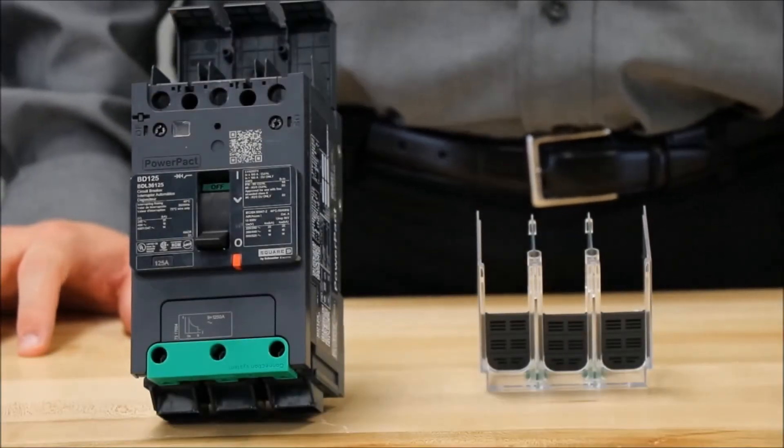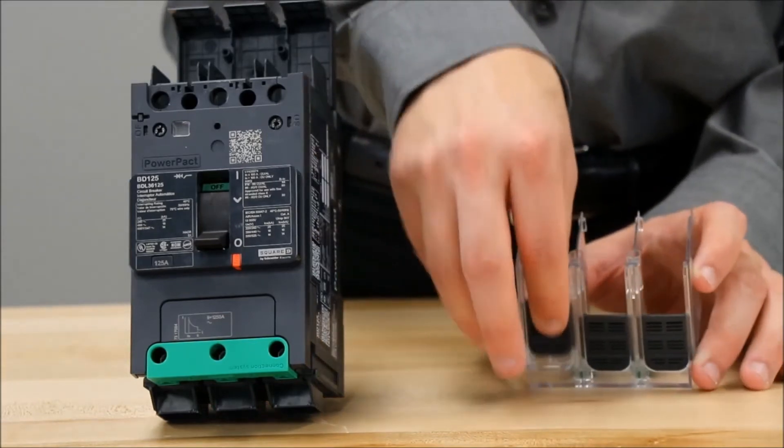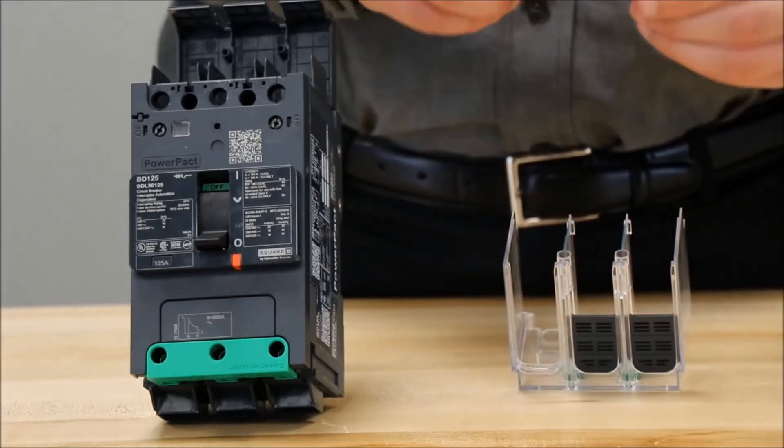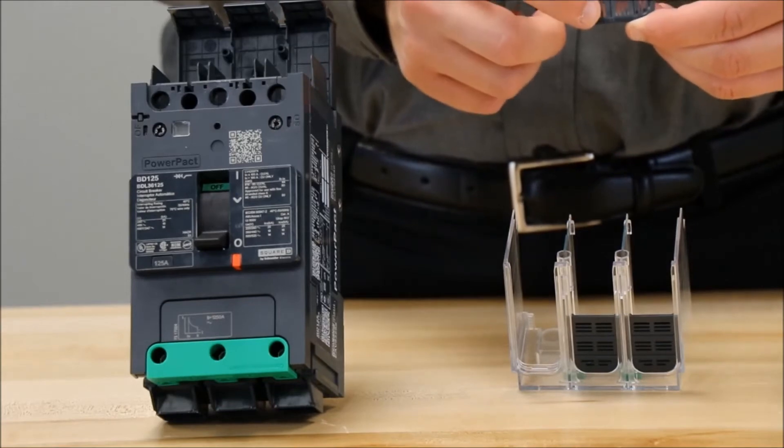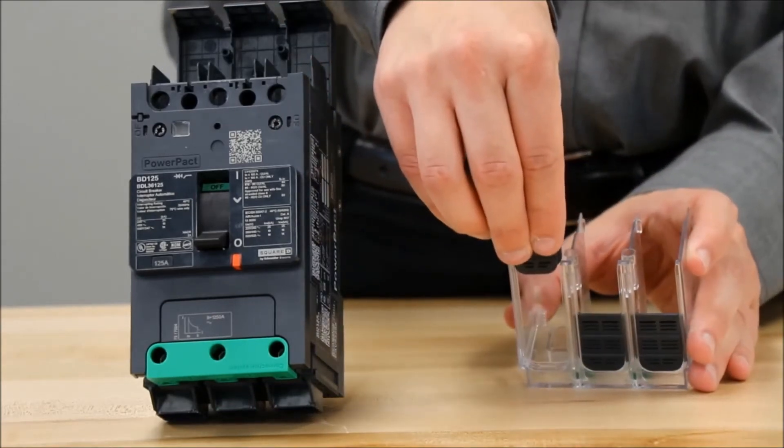To allow for adequate space for your conductors to come into the breaker, you will slide these gray tabs out and cut to the necessary length, and then slide them back into place.